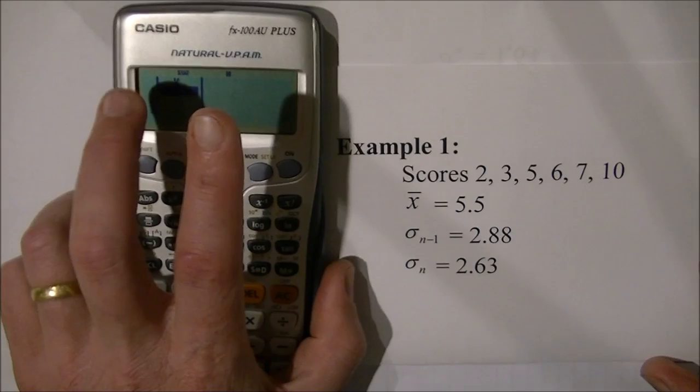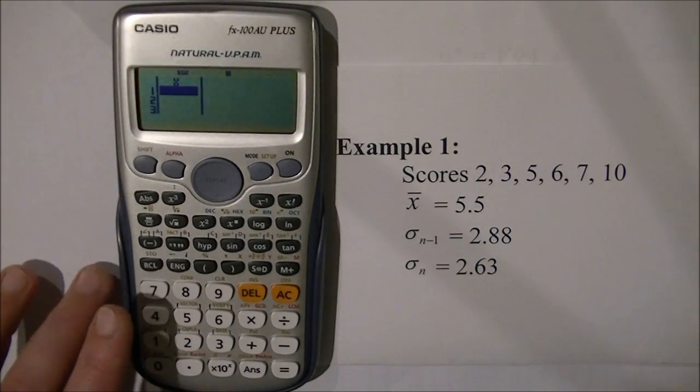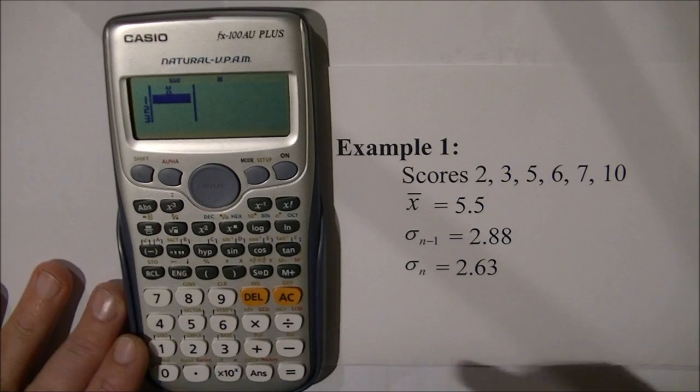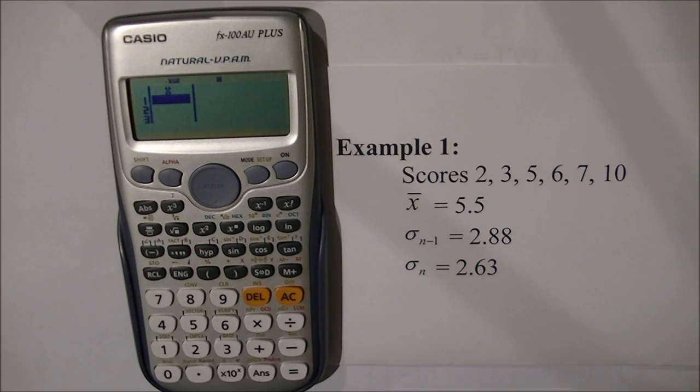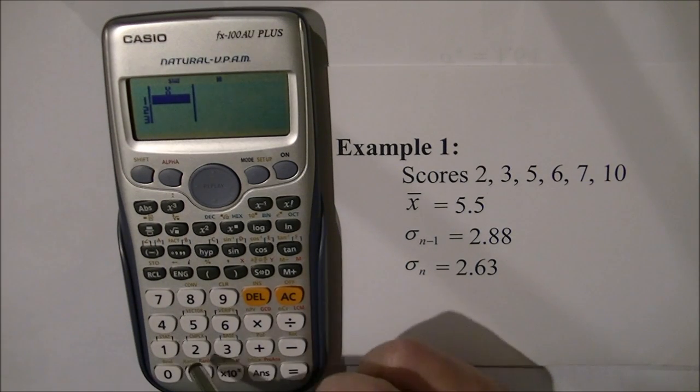Now I'm going to enter some scores into the calculator. The scores are 2, 3, 5, 6, 7, and 10. To do this, I simply need the number pad and the equals key. I'll enter the score 2,